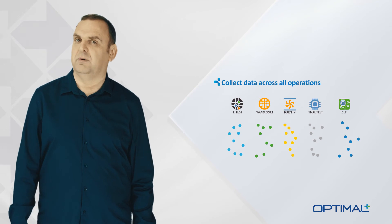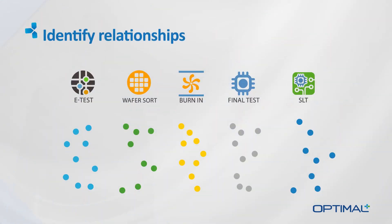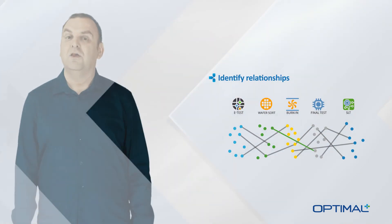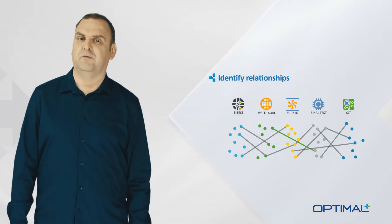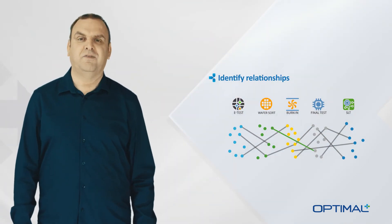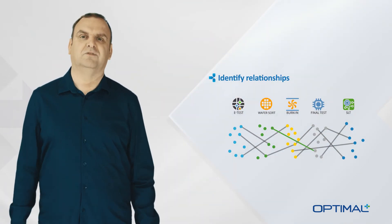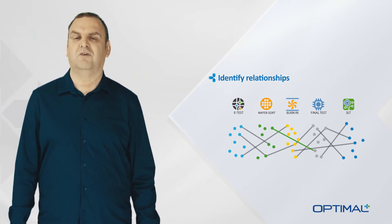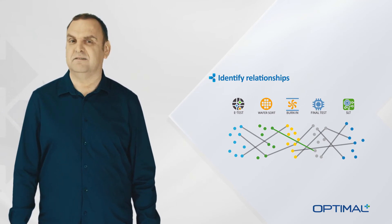For example, when you can automatically find tests in wafer sort that have a high correlation to tests at final test, there are many possibilities that become apparent. You can use this information to define algorithms that detect outliers where the results do not correlate as expected.